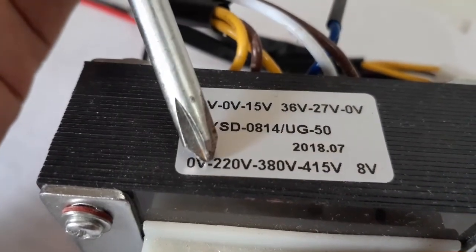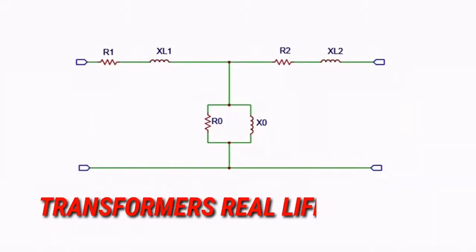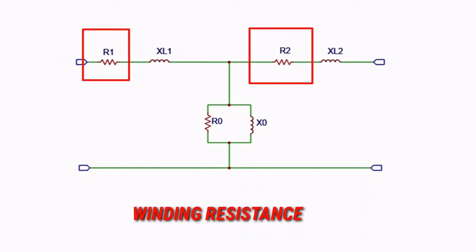to understand the real model of transformers, which is quite necessary. The transformer's real-life model looks something like this, where R1 and R2 represent the winding resistance of primary and secondary,